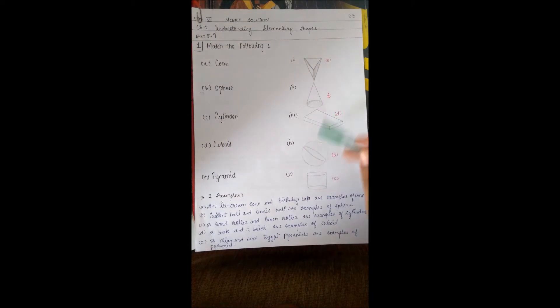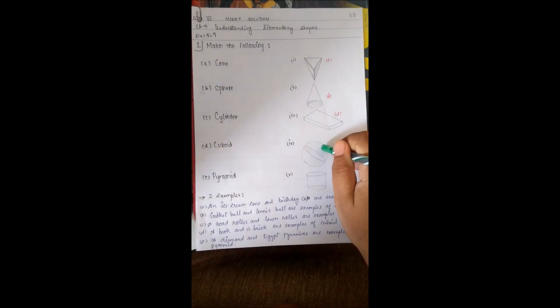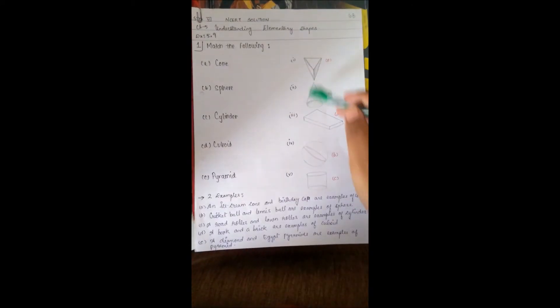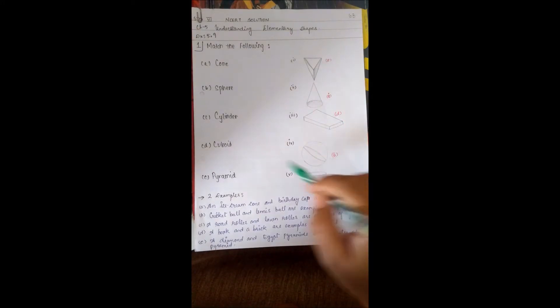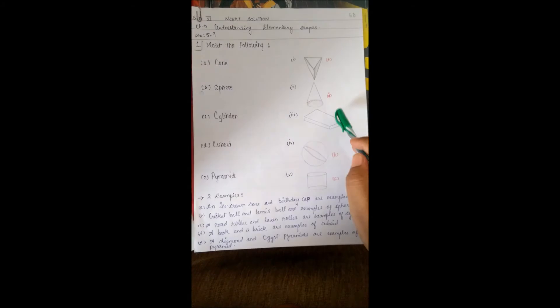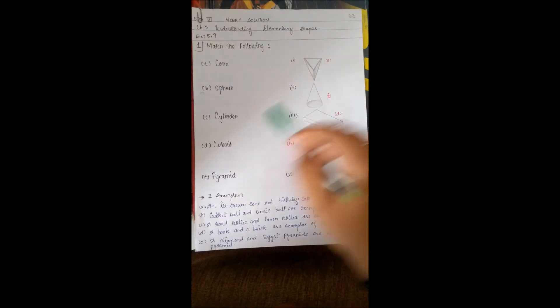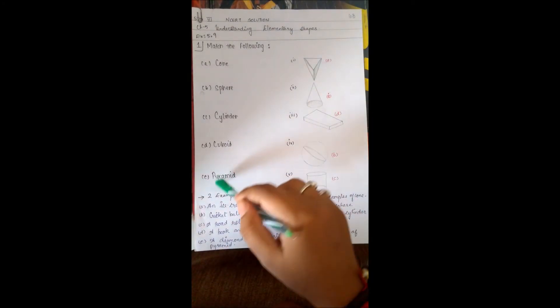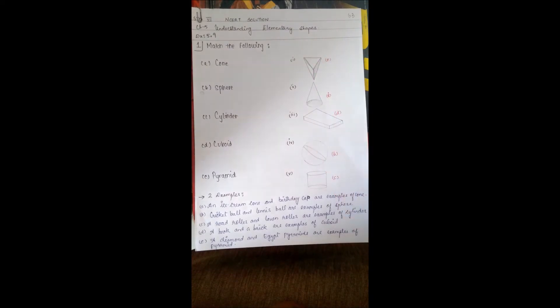Among these, this is the sphere. Cylinder - which is the cylinder among these? This is the cylinder. Cuboid - this is cuboid. And the remaining one is pyramid, so this is pyramid. Now we have to give two